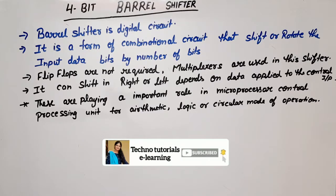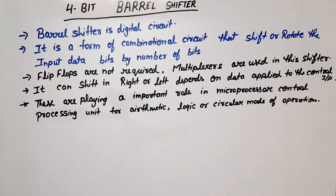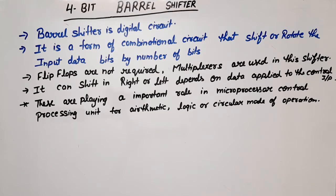First of all, the barrel shifter is a digital circuit, but it is not a sequential circuit. When we think about a shifter, we think of a shift register, which is a group of flip-flops. But in the case of a barrel shifter, we do not use flip-flops — we use multiplexers, and a multiplexer is a combinational circuit. So barrel shifter is a combinational circuit, not a sequential circuit.